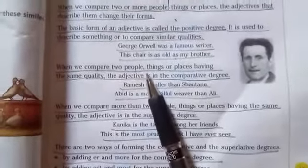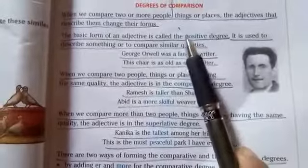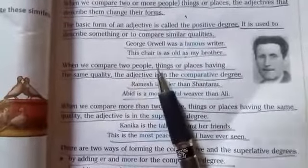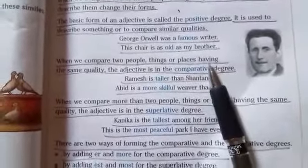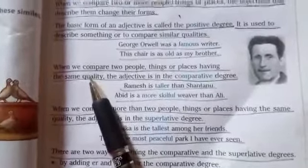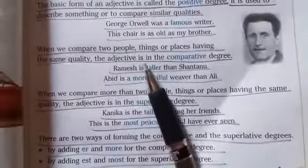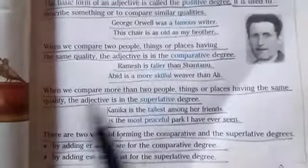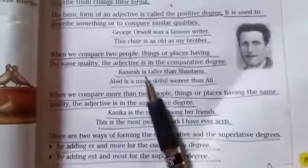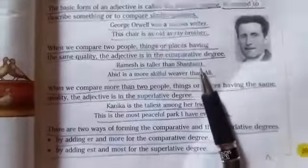Now, when we compare two people, things or places having the same quality, the adjective is in the comparative degree. Then we use the adjective in comparative degree. For example, 'Ramesh is taller than Shantanu.'